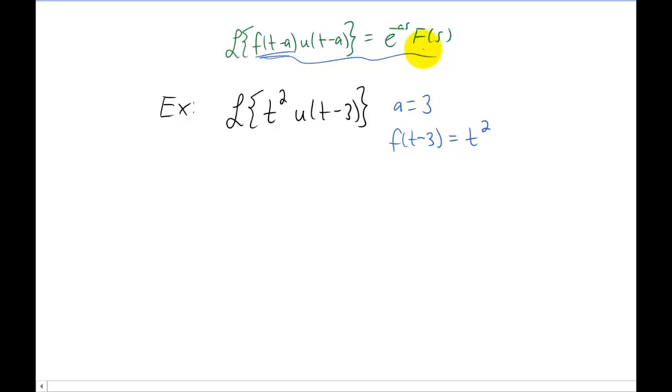Now I'm going to make the same argument that I did last time. We know e to the negative a s because we know that a equals 3. All we need now is capital F of s. To get capital F of s we need little f of t.